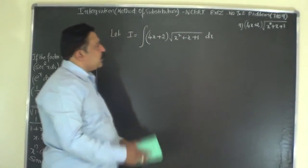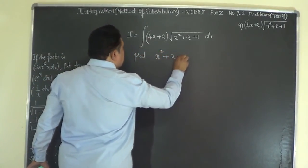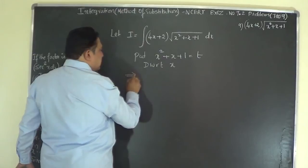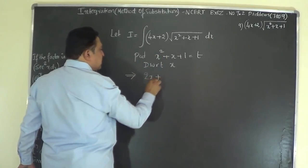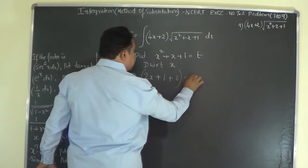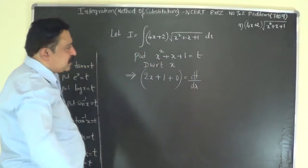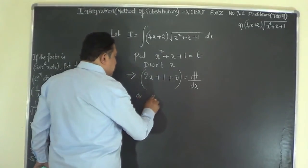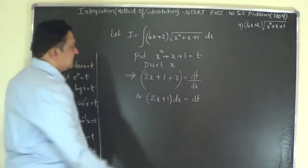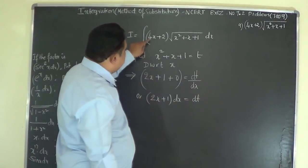So we put x²+x+1 equal to t. Differentiating with respect to x: the differential coefficient of x² is 2x, of x is 1, and of 1 is 0, giving (2x+1) dx equals dt. We have (2x+1) dx = dt, but the integrand has (4x+2).